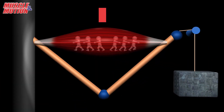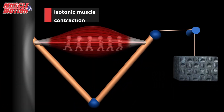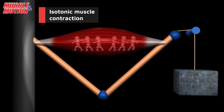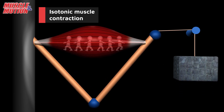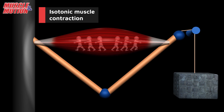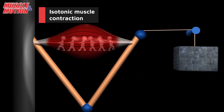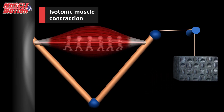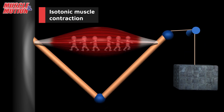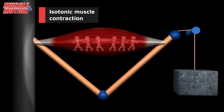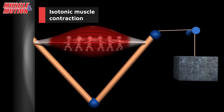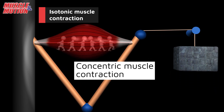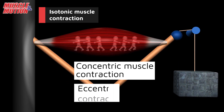Isotonic muscle contraction is the best-known type of contraction. It is characterized by a change in muscle length during contraction without a change in load or resistance. There are two types of isotonic muscle contractions: concentric contraction and eccentric contraction.